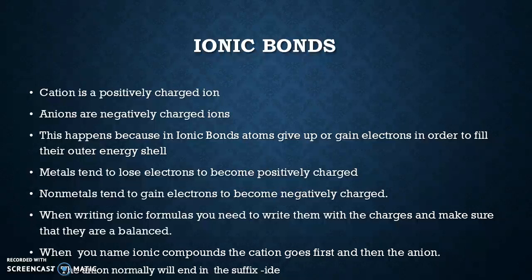When you name ionic compounds, the cation goes first and then the anion. So the cation would be sodium. The anion normally ends in the suffix "-ide" — so even though it's sodium and chlorine coming together, when combined it officially becomes sodium chloride.